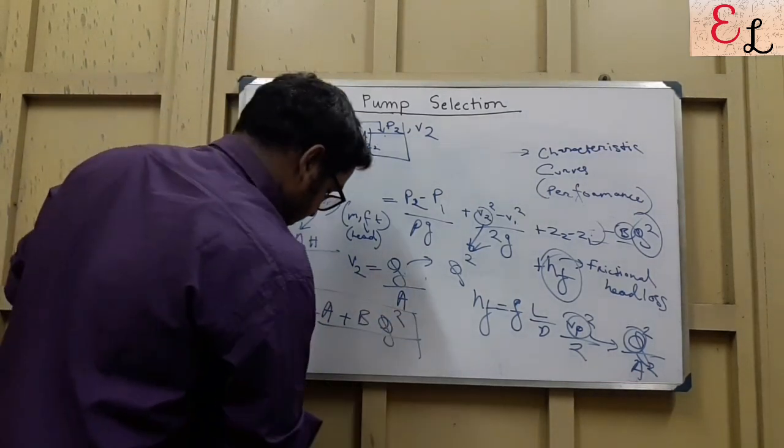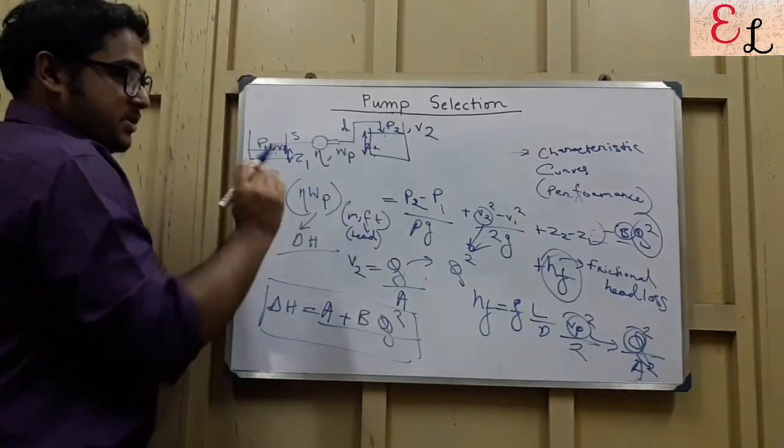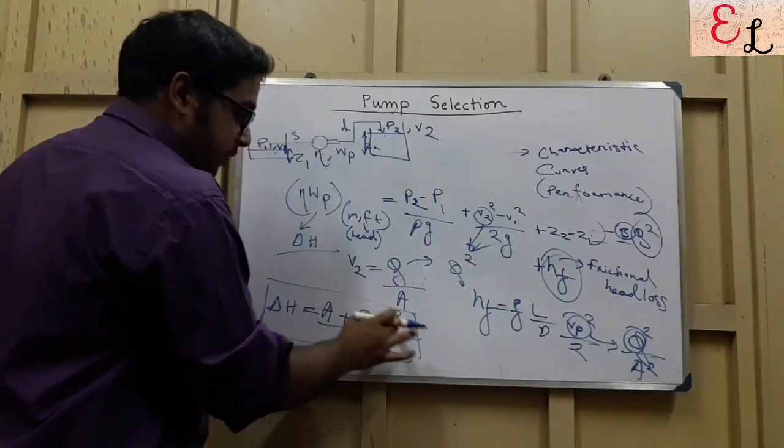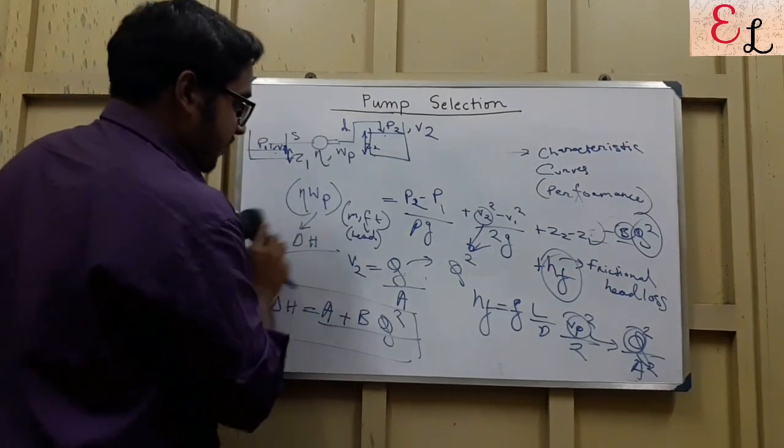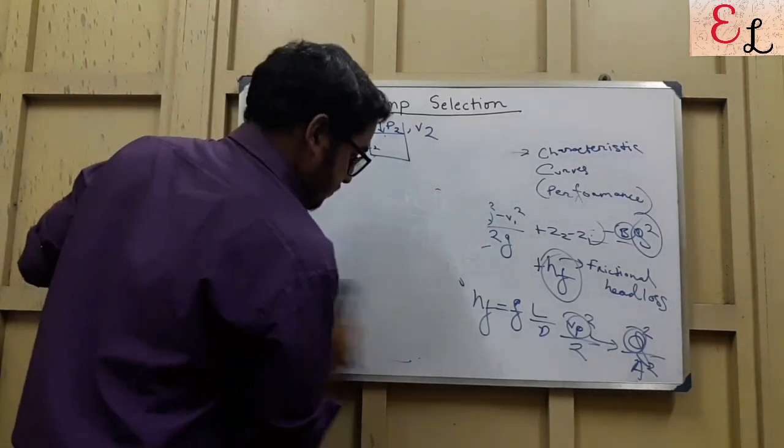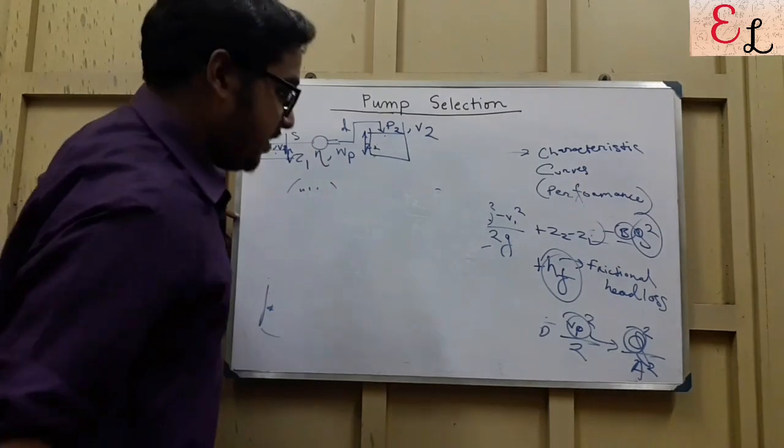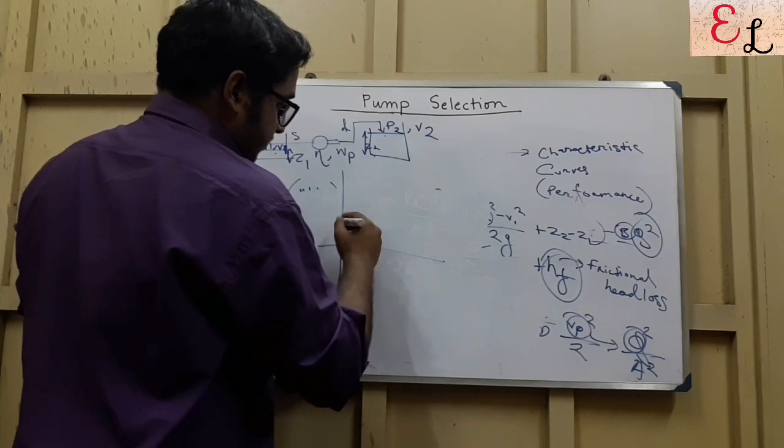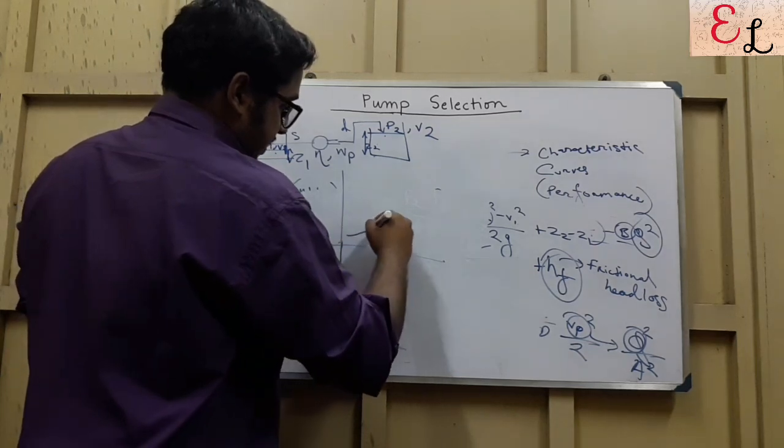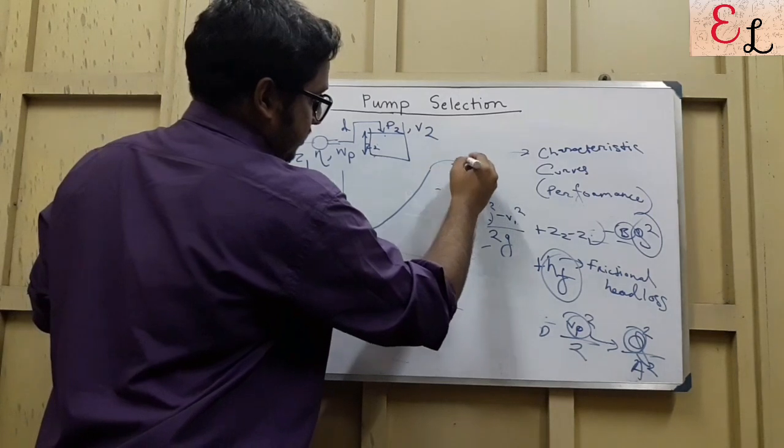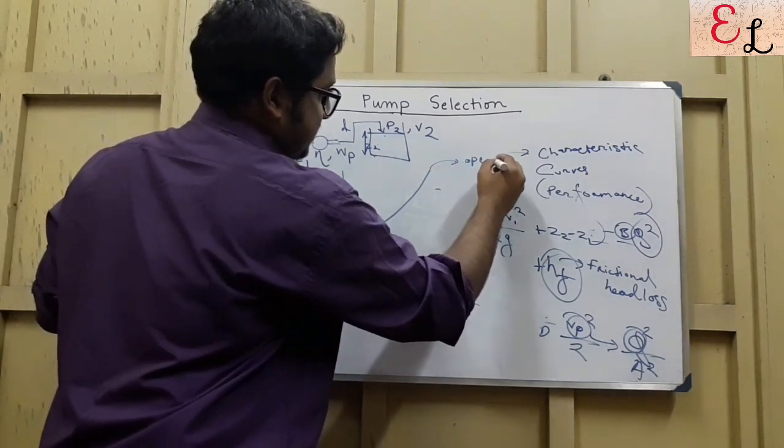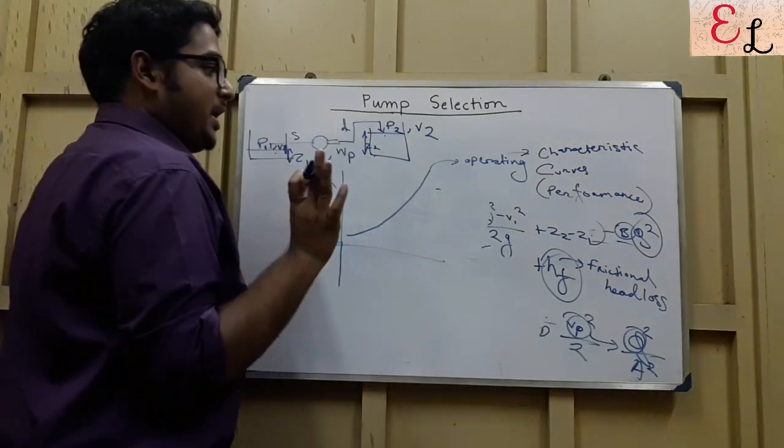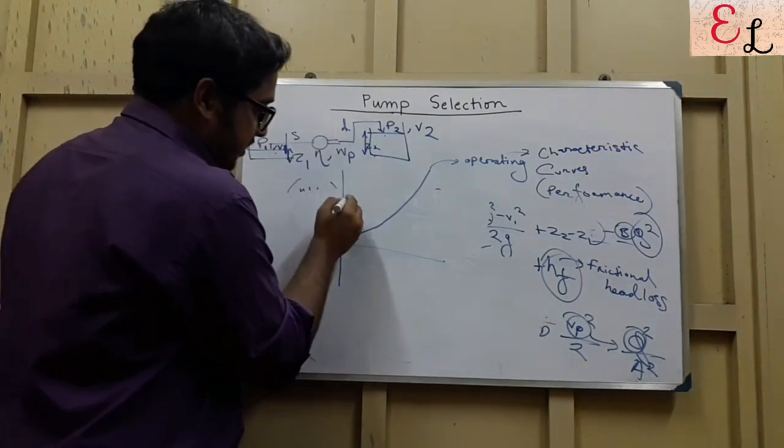So operating conditions from the normal energy balance equation, you see the operating conditions give us a shape where this is directly proportional to Q square. Now if we refer to the curve, we will find something like this, the operating line. This is the operating line. And it's the same for any pump, irrespective of the pump number, the operating line does not change. What changes is the characteristic curve.